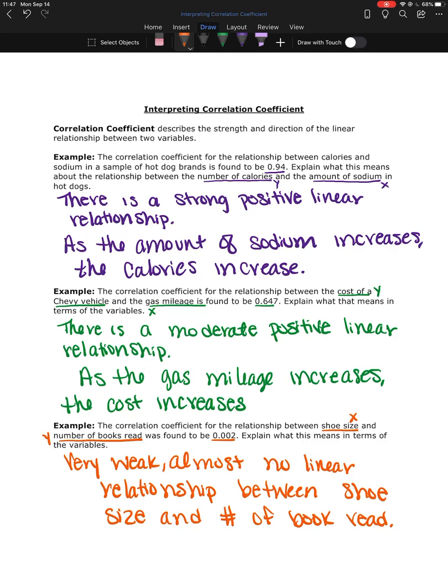And because this relationship is so weak, it's so close to zero, it's in that orange range from our picture, I would not even dare to say that the shoe size increasing causes the number of books read to increase. Yes, it is positive, but it's such a weak relationship that I'm not even going to go there.